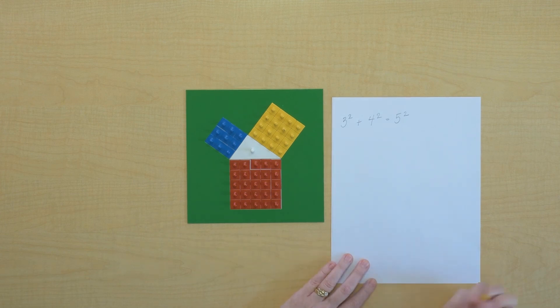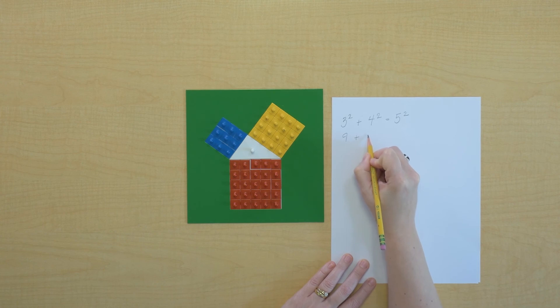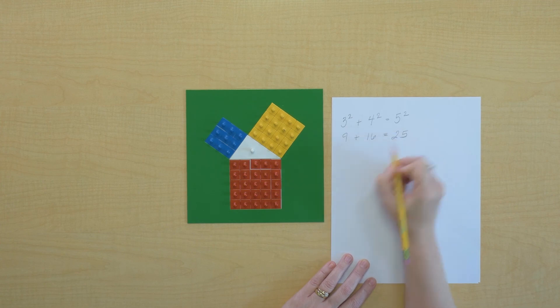Let's see if that's true. We can do that with arithmetic, can't we? What's the value of three square? It's nine. And the value of four square is sixteen. And the value of five square is twenty-five. Nine plus sixteen equals twenty-five.